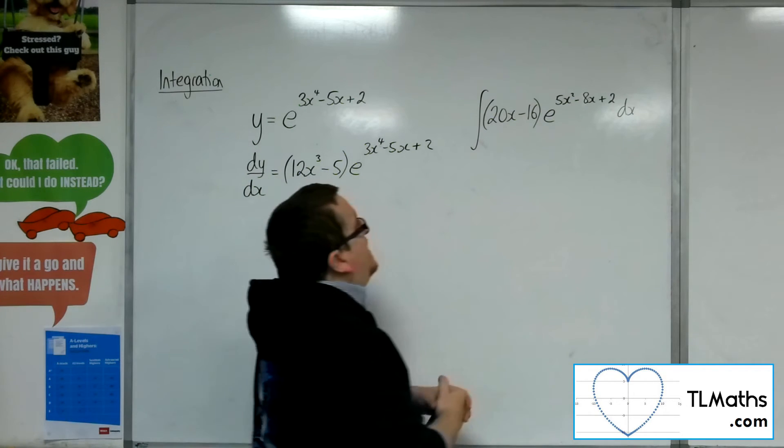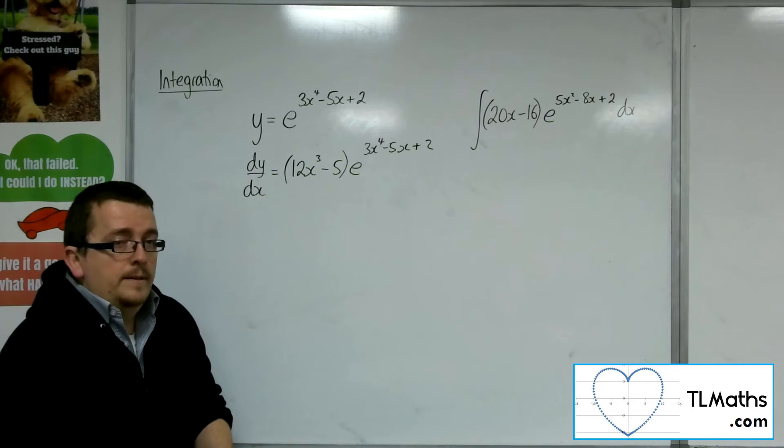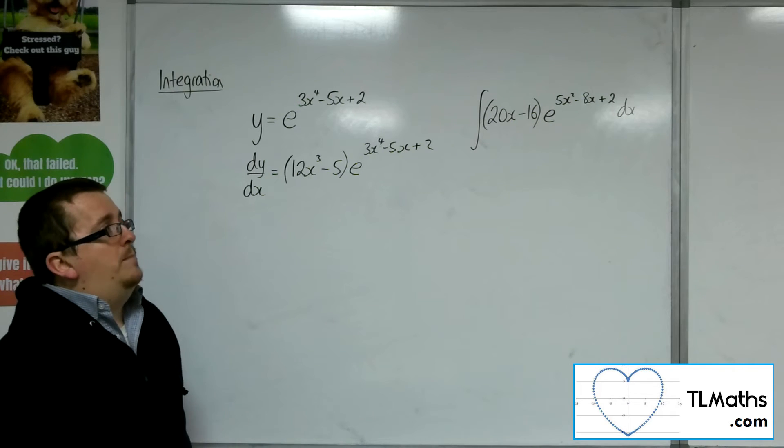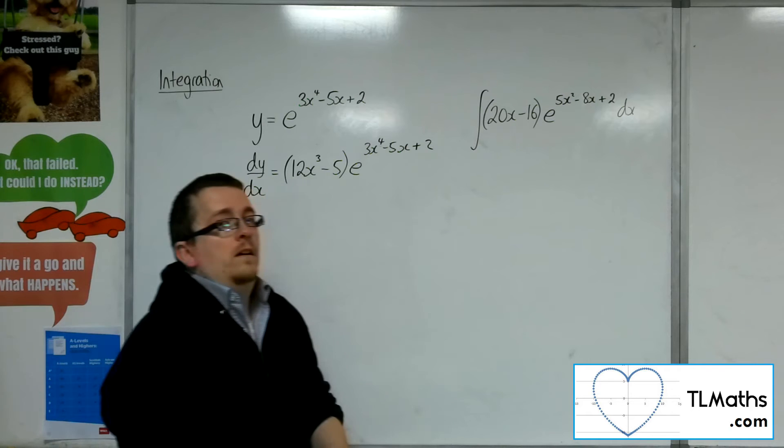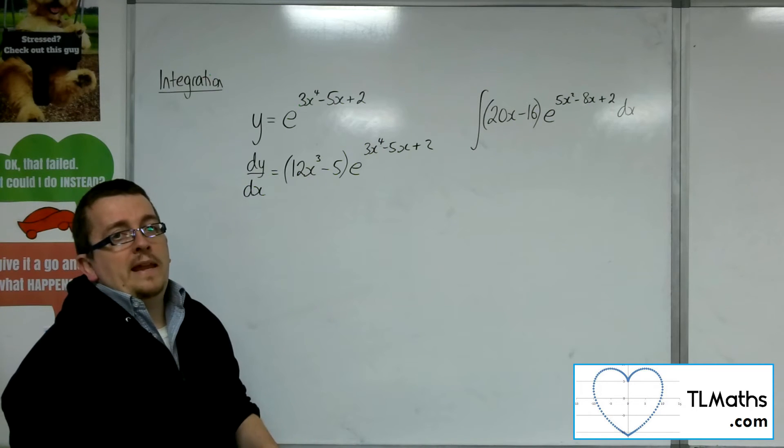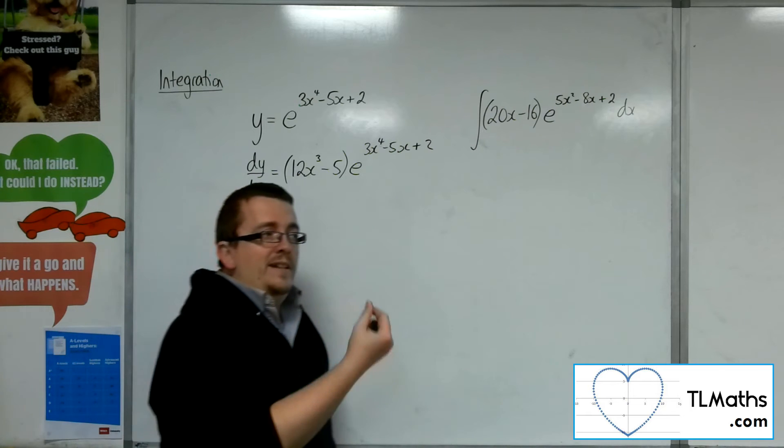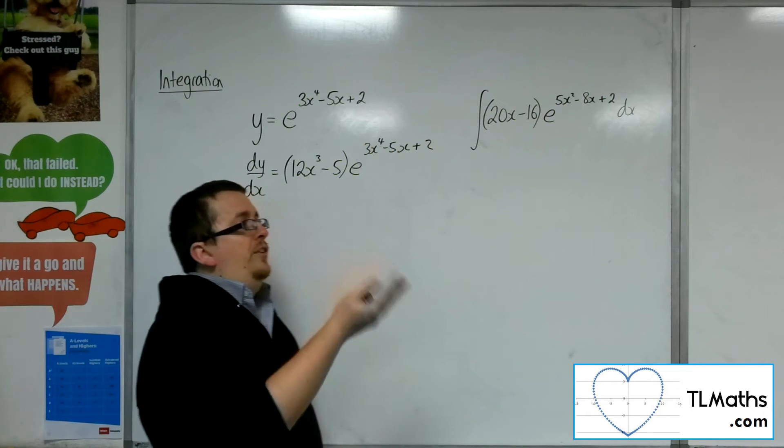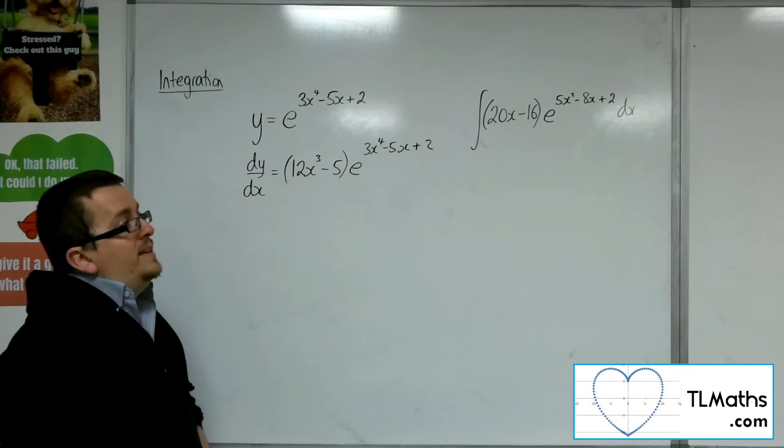If it was 20x minus 15, lots of e to the 5x squared minus 8x plus 2 dx, then I wouldn't be able to use this process. It wouldn't be what I required. So a slight difference causes this whole situation to break down.